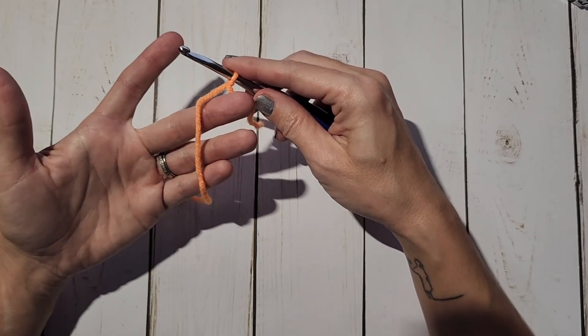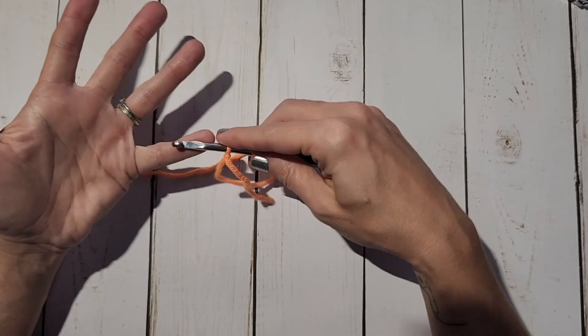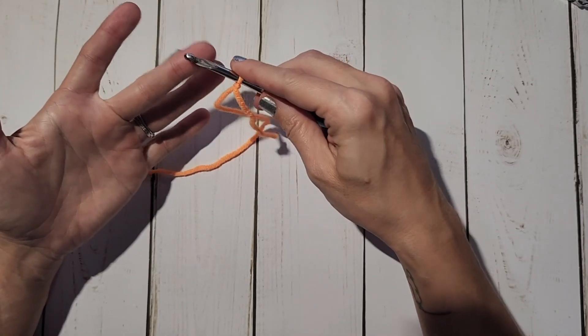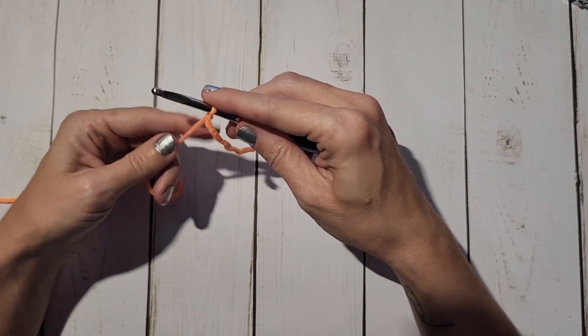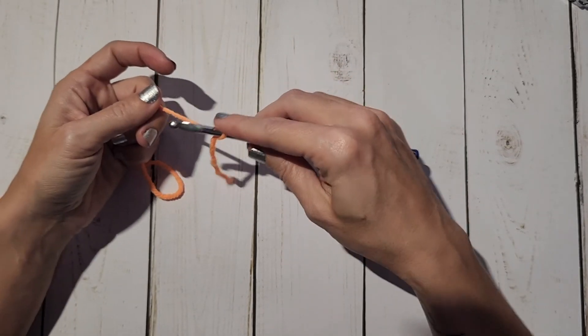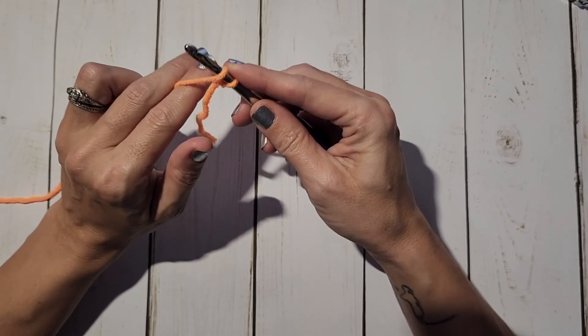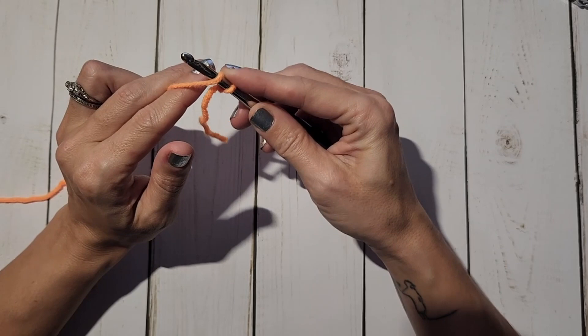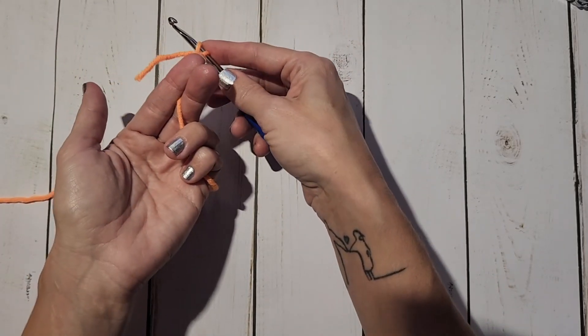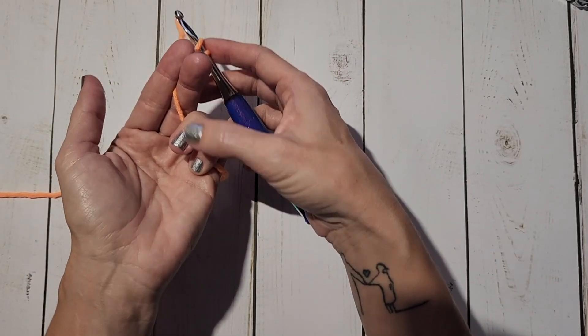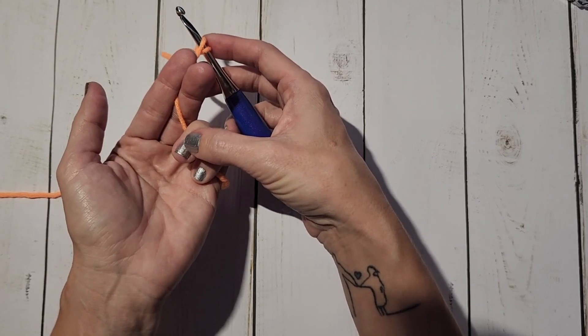drape the yarn over my pinky, my ring finger, and my middle finger. Then my pointer finger kind of braces it on this side. If you look, this is what my hand looks like on the bottom. My pinky and my ring finger are kind of